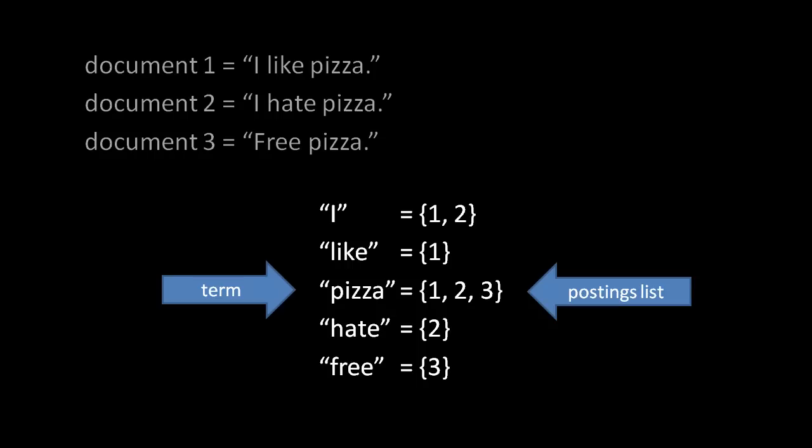So, the inverted index is basically just a big map in which terms are associated with lists of document IDs. The important question, then, is what exactly is a term? You might naively answer that each word in a document is a term, but text is generally more complicated than that.